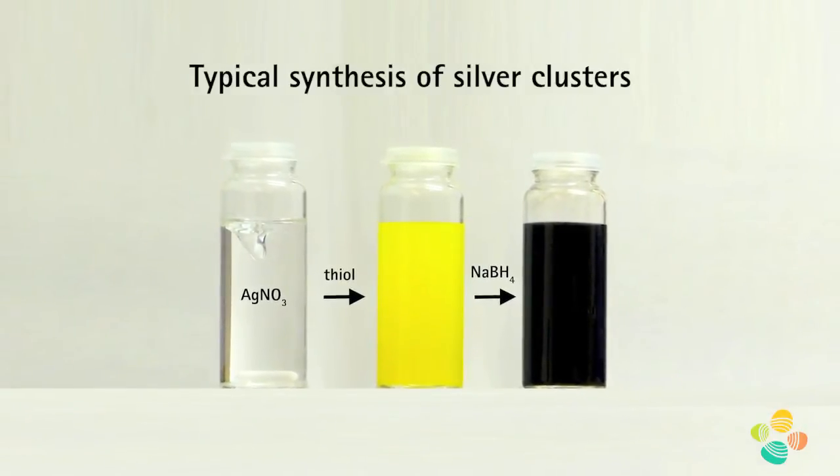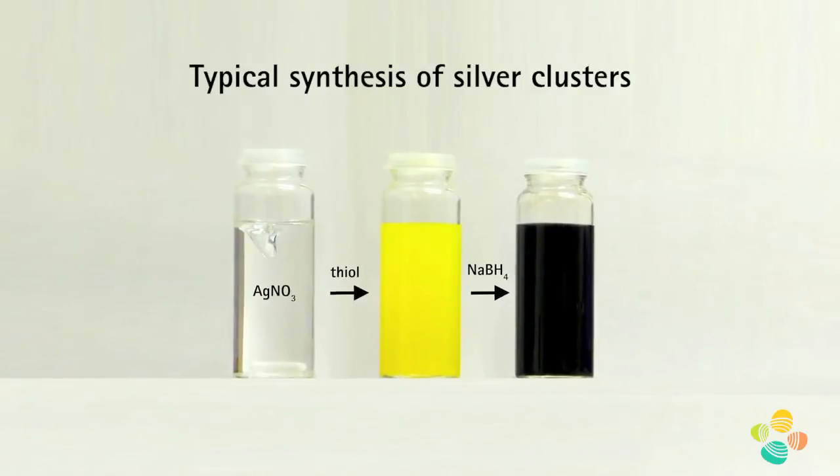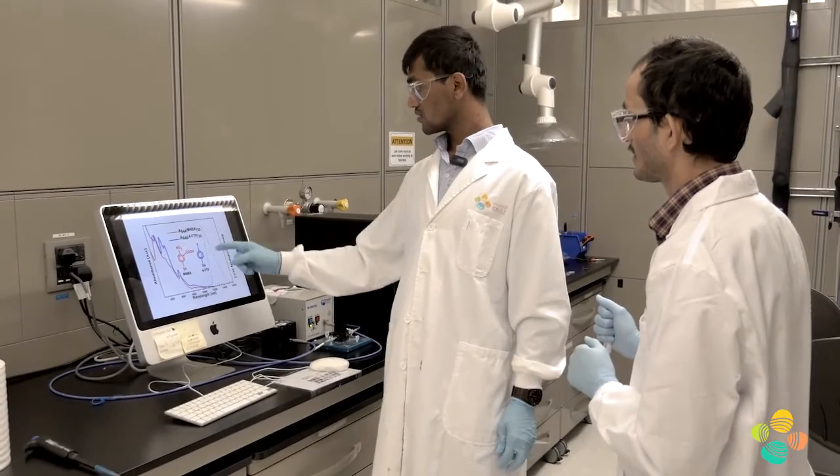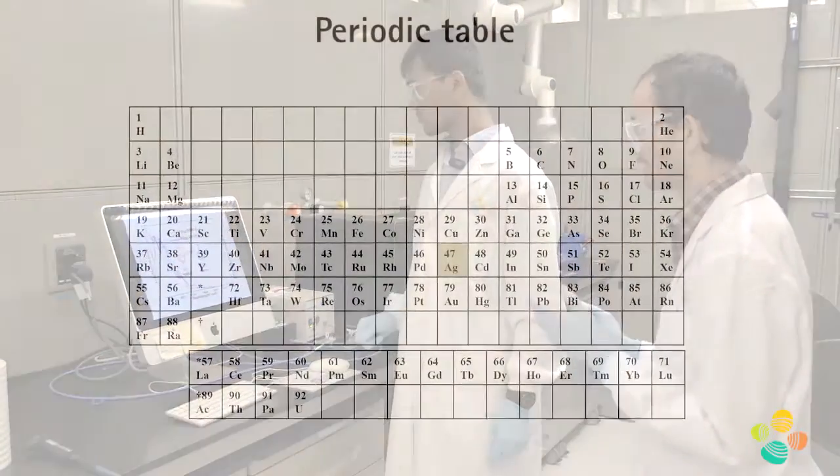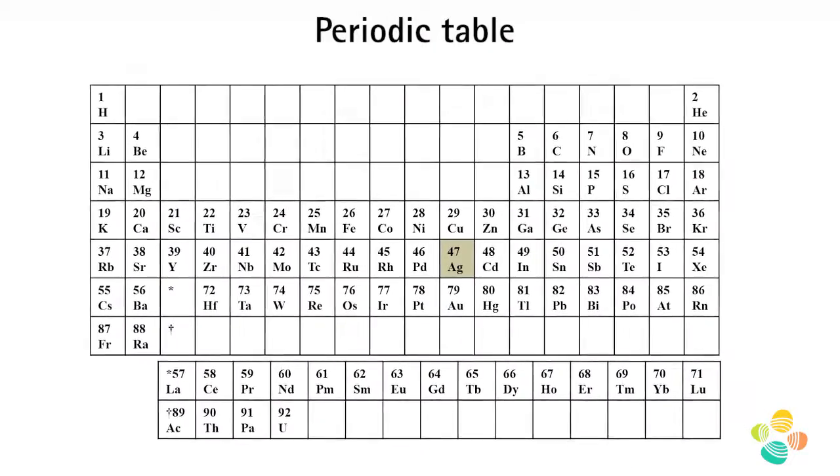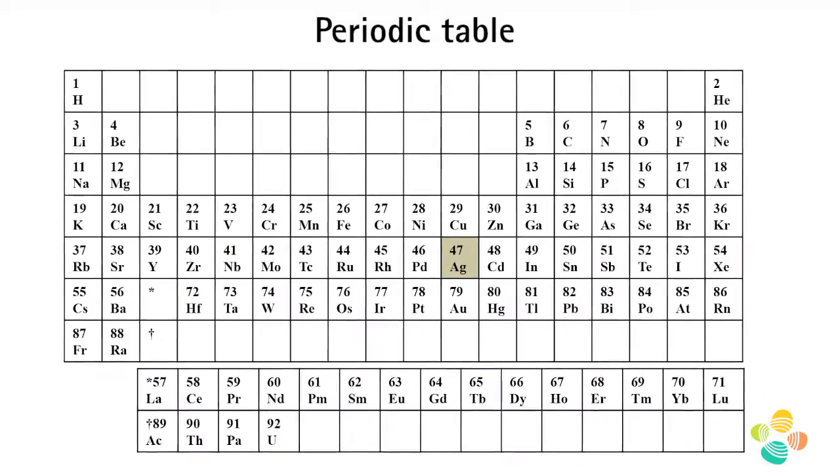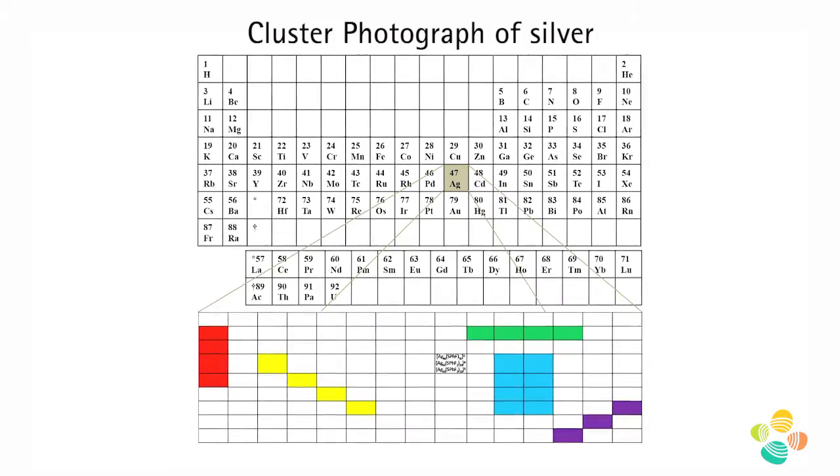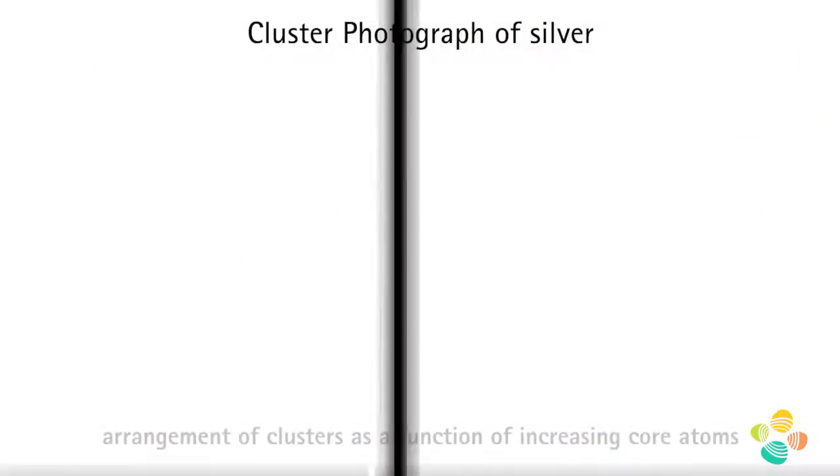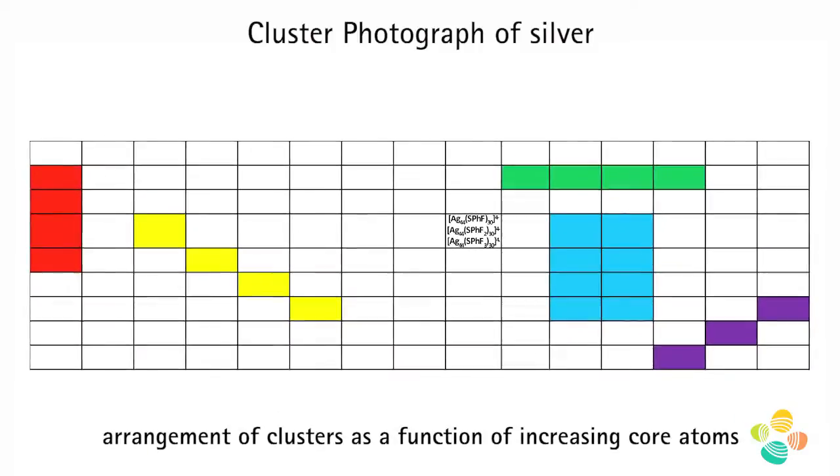The next challenge is how could we study so many silver clusters produced in future. We think the organization of these silver clusters or any metal clusters according to their core atom count could solve the problem. As we see in the periodic table of elements, the elements are arranged according to their atomic number. We can also have precise numbers when we arrange our clusters according to their core metal atom count. This way we could conceptualize the organization of the clusters and their subsequent study.